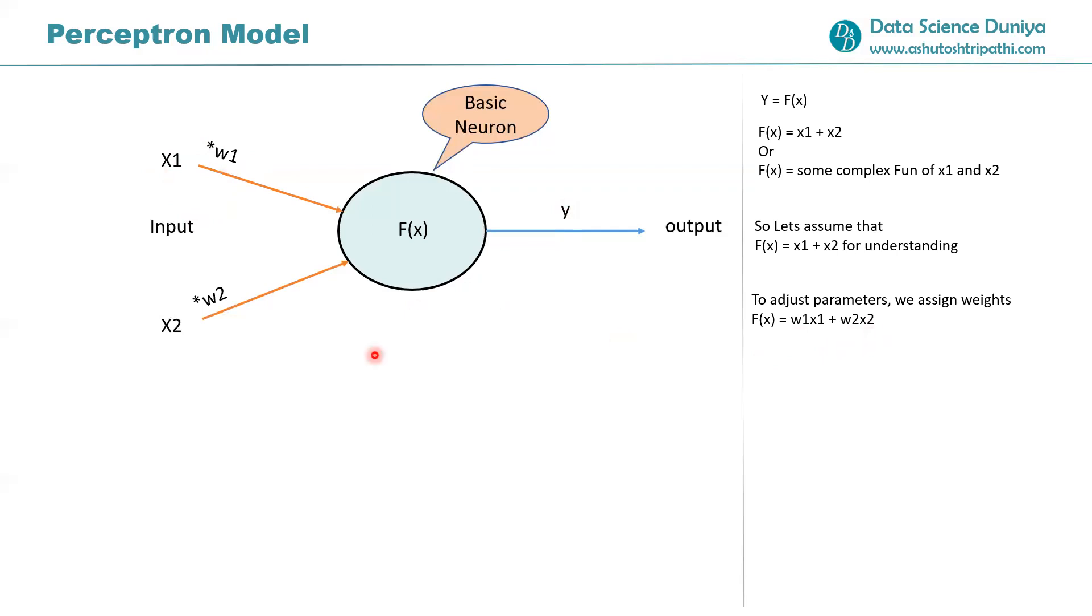Now, another scenario could be suppose x1 and x2 both are zero. Then it doesn't matter what weight you assign, you will not get any outcome. To handle this scenario, we have something called bias terms associated with each weight. So now we have bias b1 with respect to w1 and bias b2 with respect to w2. So our equation becomes f(x) equals (x1*w1 + b1) plus (x2*w2 + b2).